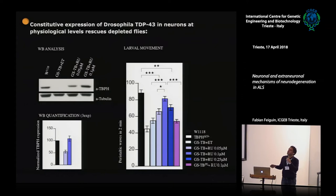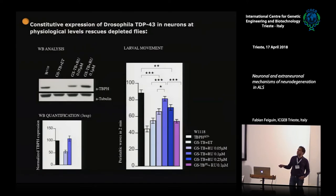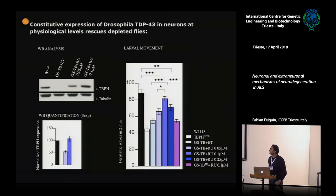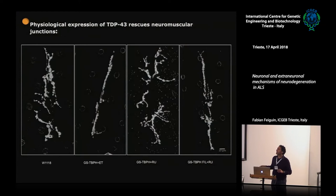What we found is that expressing TBPH with this conditional system at wild type levels rescues the TBPH minus phenotypes. With different drug concentrations we get better and better rescue, but if we increase expression too much we start to get deleterious effects again. The optimal concentration gave the best rescue. We saw recovery of the motility defect in climbing assays, recovery of motility problems, and also recovery of the innervation of the neuromuscular junction.